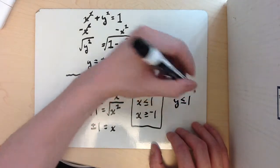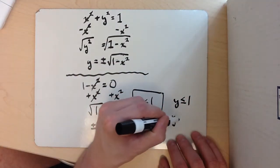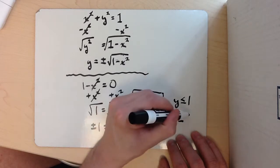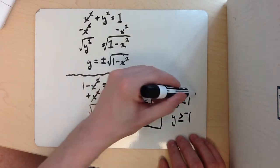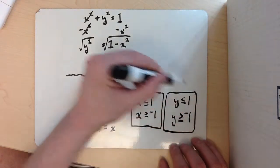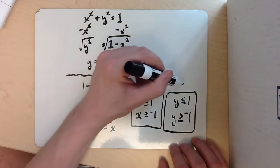It's going to be y is less than or equal to 1 for the range. So I'm just going to write that in there - y is less than or equal to 1 or y is greater than or equal to negative 1. So this would be our domain and this would be our range.